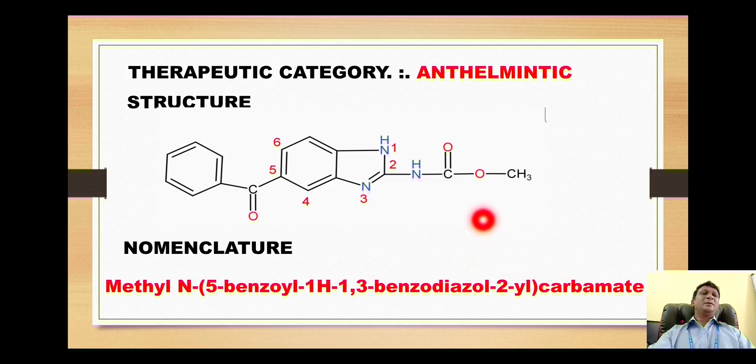So this is the basic nucleus, methyl carbamate. On this nitrogen of carbamate we have the substituent group - on nitrogen we have 5-benzoyl-1H-1,3-benzodiazol-2-yl as a substituent group. So from this IUPAC name if we pick these letters, it will become mebendazole. So that is how the name is given to this anthelmintic drug.